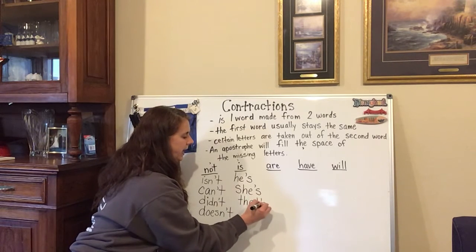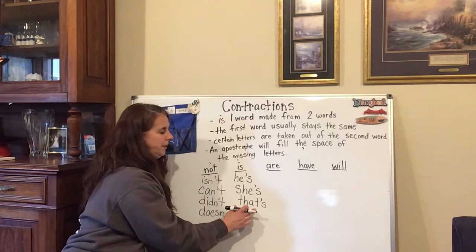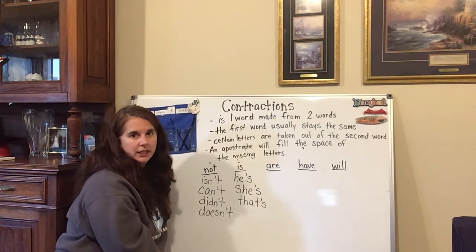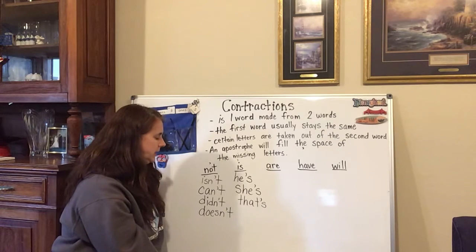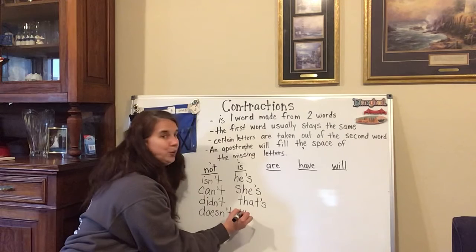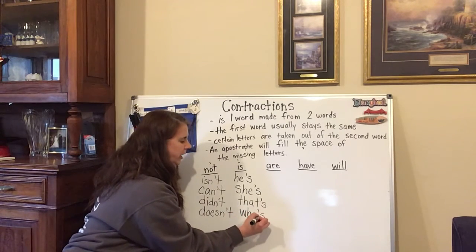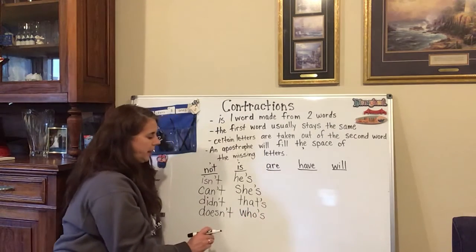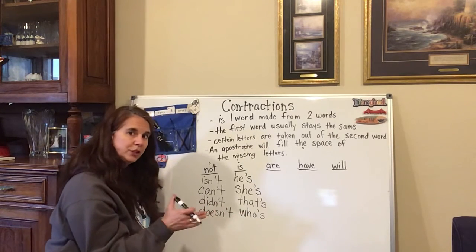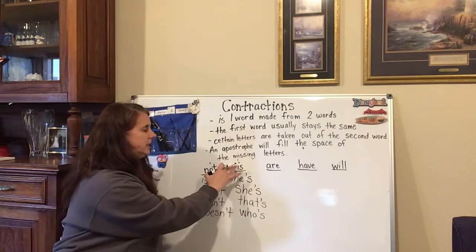'That is' — 'that's a good idea.' 'That' stays the same, and the apostrophe is taking the place of the I in 'is.' He's, she's, that's. 'Who is' — we'll make 'who's.' 'Whose turn is it?' 'Who' stays the same, and again the apostrophe is taking the place of the I in 'is.' So that's the 'is' group.